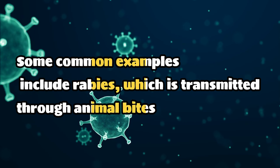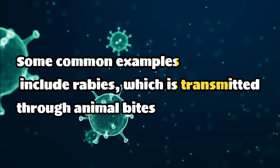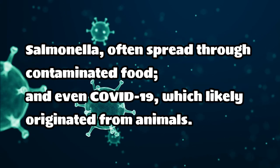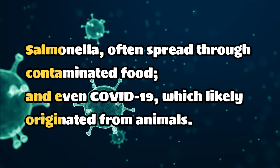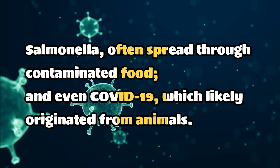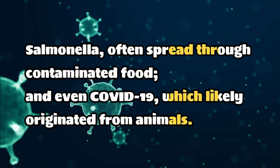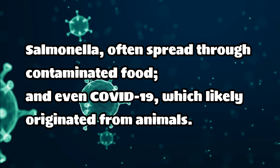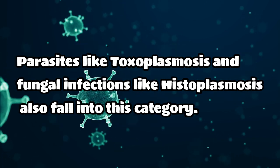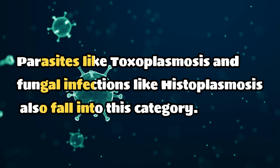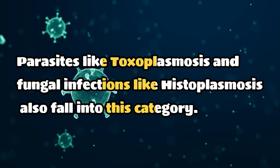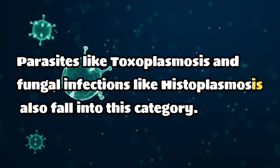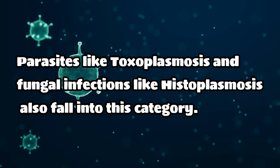Some common examples include rabies, which is transmitted through animal bites; salmonella, often spread through contaminated food; and even COVID-19, which likely originated from animals. Parasites like toxoplasmosis and fungal infections like histoplasmosis also fall into this category.